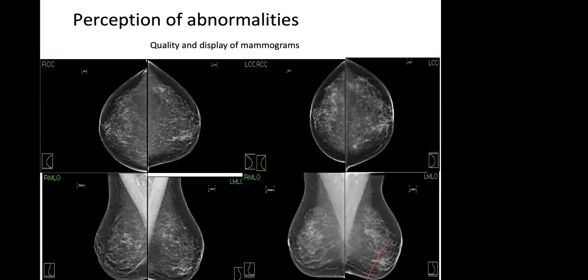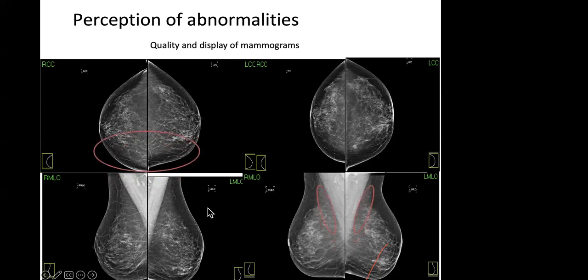In terms of perception of abnormalities — how do we actually go about looking at mammograms? We consider quality and display, look at previous and new images side by side, and compare the two to see what has changed. There are also areas where you shouldn't see things — such as the medial areas of the breast, which should be nice and fatty. If you see something there, that's concerning and requires further investigation.